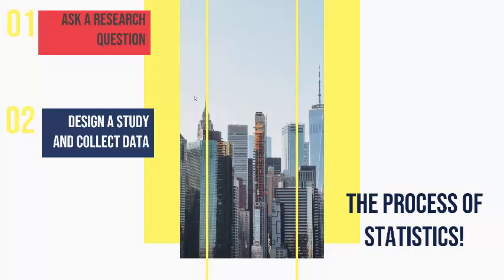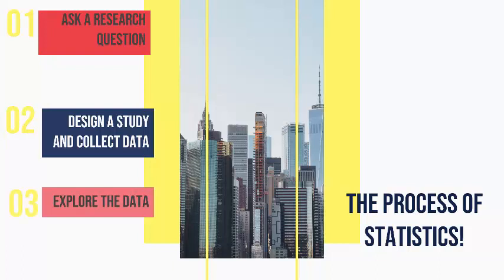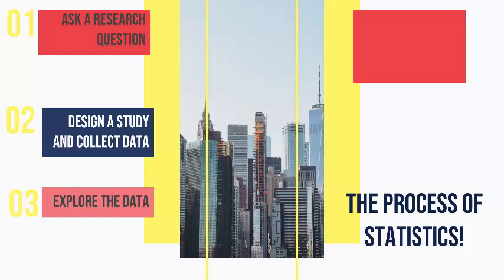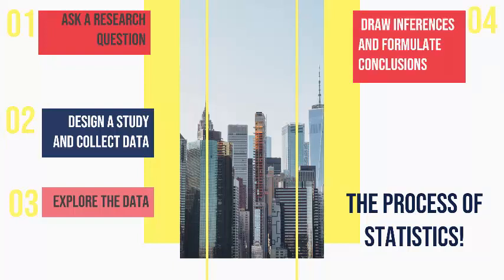Once you have the raw data from step two, what you want to do in step three is take this data and explore it — turn it into consumable information. Basically, step three is about descriptive statistics. This is section one of the course, where we take a string of raw data and turn it into something consumable. Step four is we draw inferences and formulate conclusions from the data, which is section five of our course.